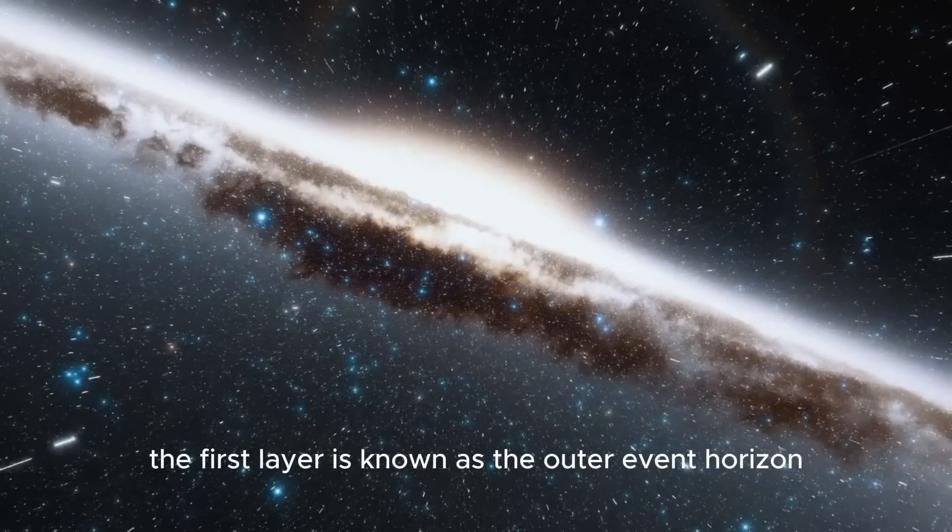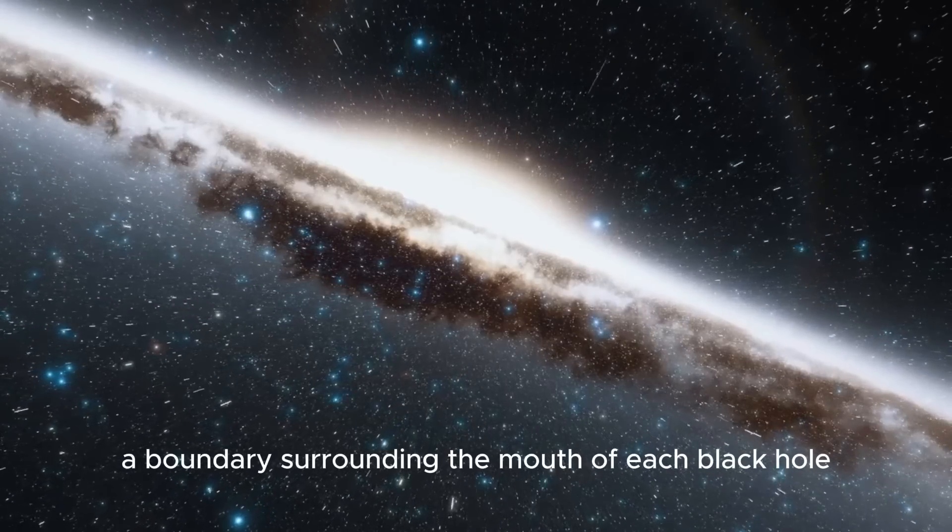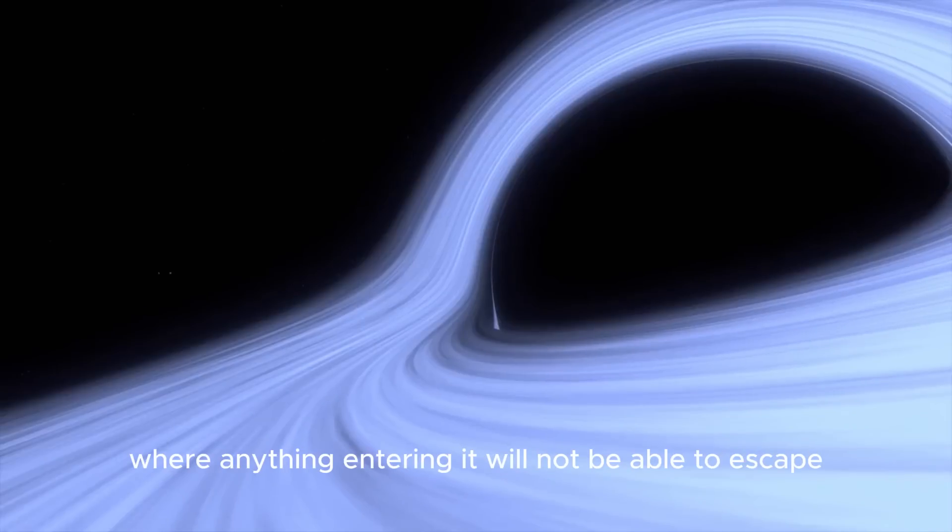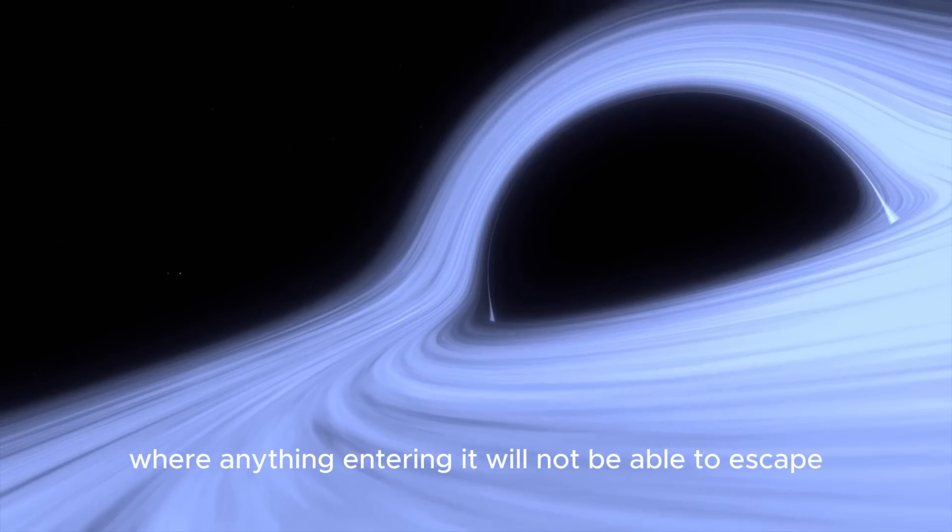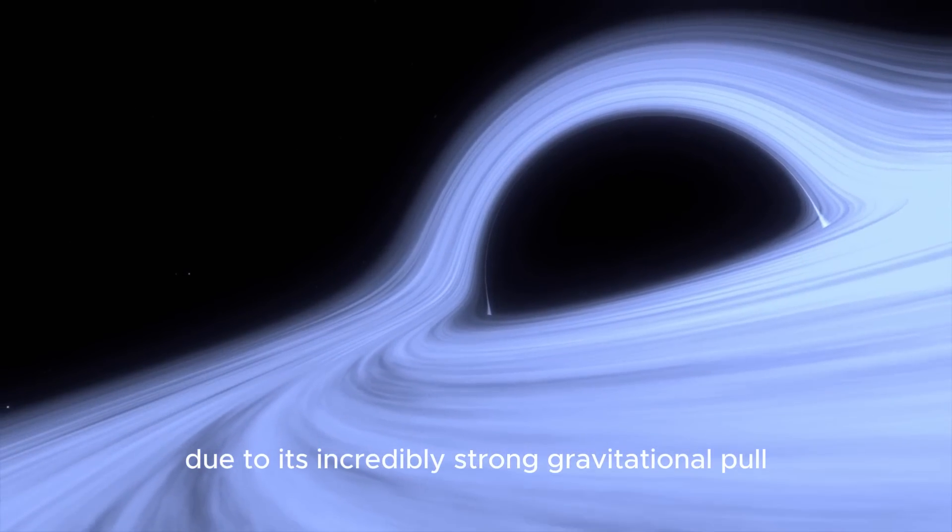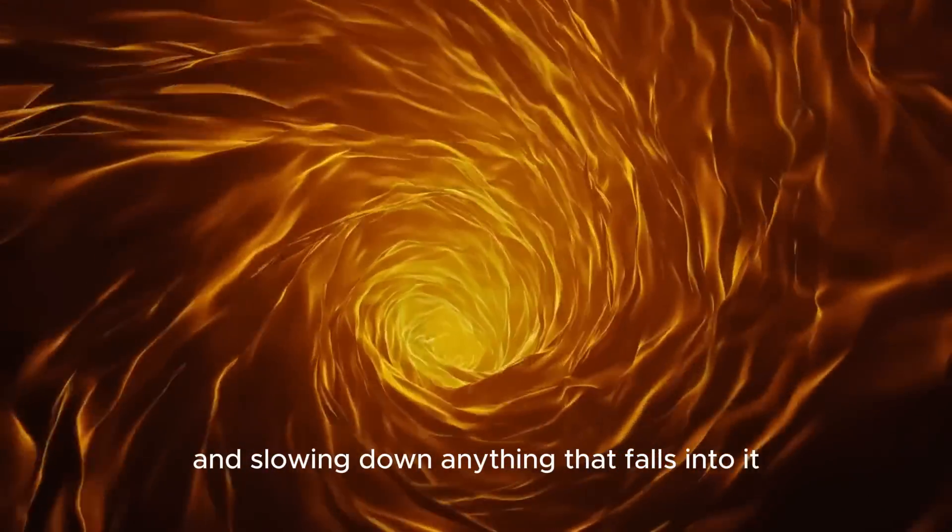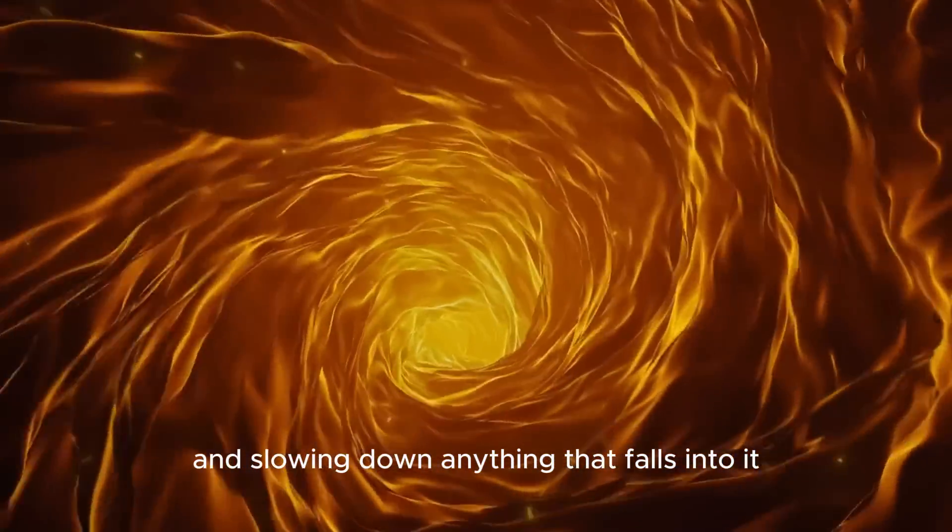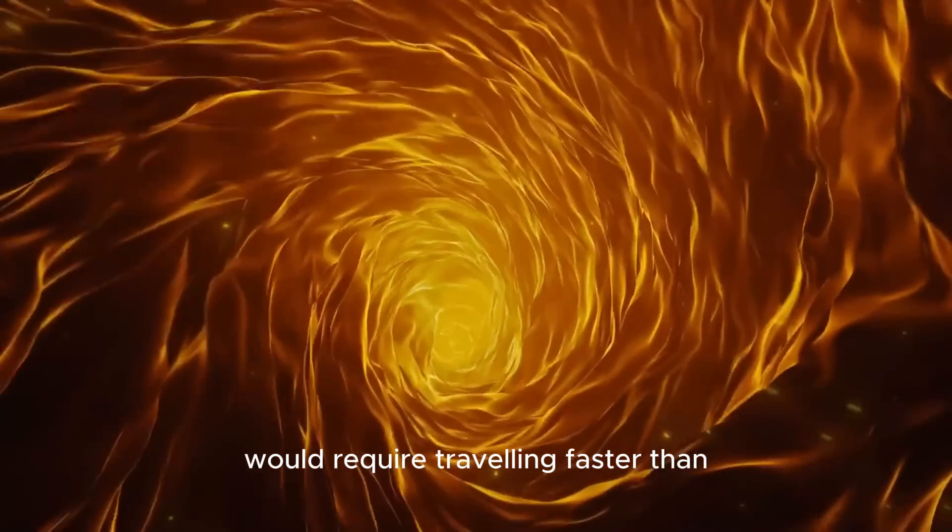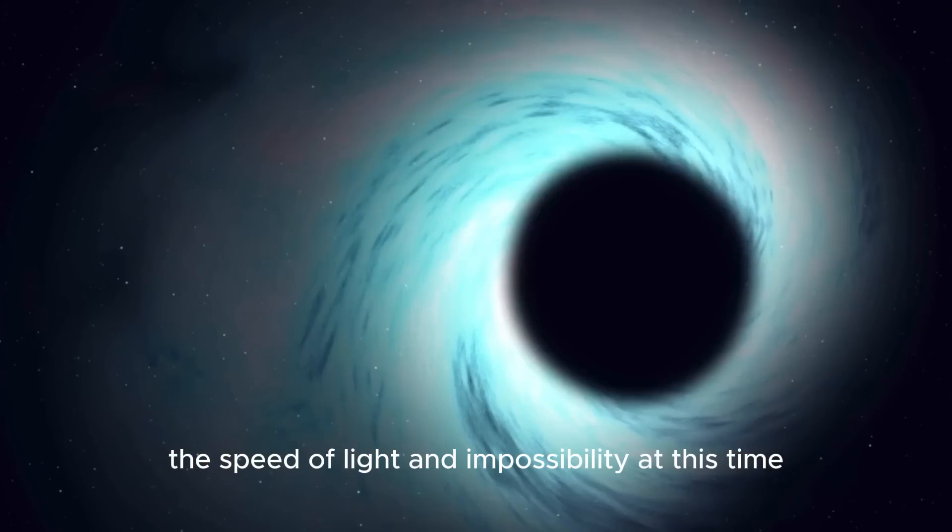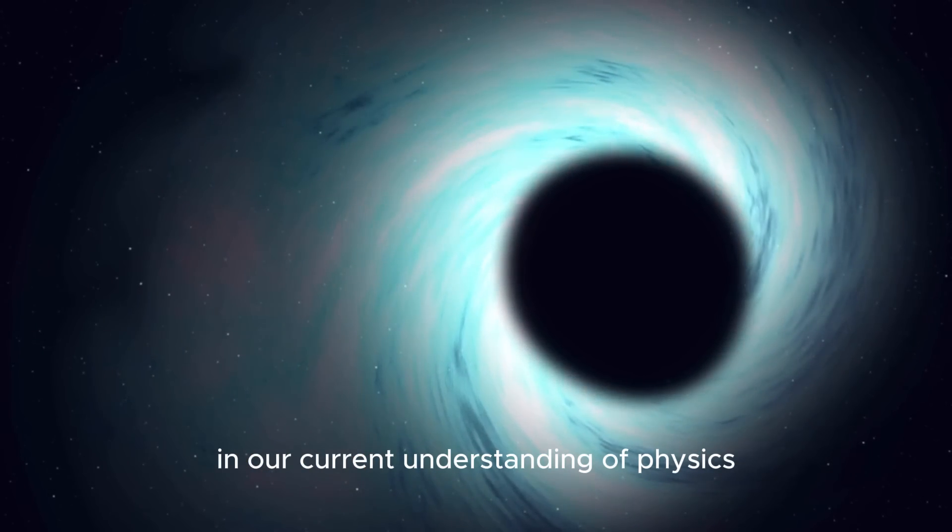The first layer is known as the outer event horizon, a boundary surrounding the mouth of each black hole where anything entering it will not be able to escape due to its incredibly strong gravitational pull. This layer is responsible for trapping and slowing down anything that falls into it, so much so that to escape would require traveling faster than the speed of light, an impossibility at this time in our current understanding of physics.